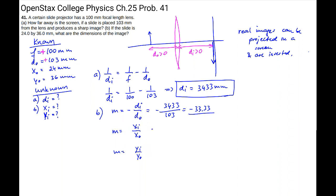So when we solve for the image width, the x i, we get m times x o, where m was negative 33.33 times x o, which was 24. And that gives us about 800 millimeters. And it's a negative sign. So this is the x i.